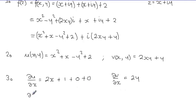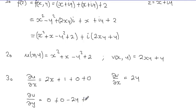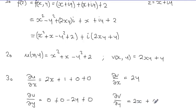Now taking the partial derivative with respect to y: ∂u/∂y treats x² + x + 2 as constants (zero), and differentiates −y² to get −2y, so ∂u/∂y = −2y. For ∂v/∂y, 2x is the coefficient of y, so differentiating 2xy + y gives ∂v/∂y = 2x + 1.